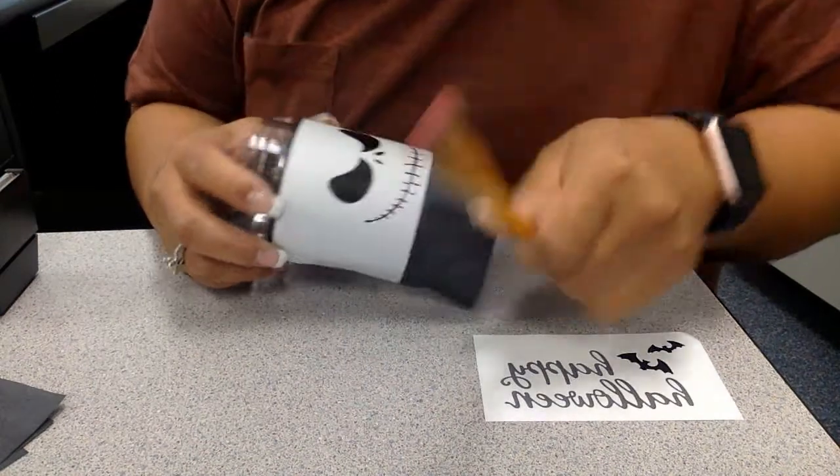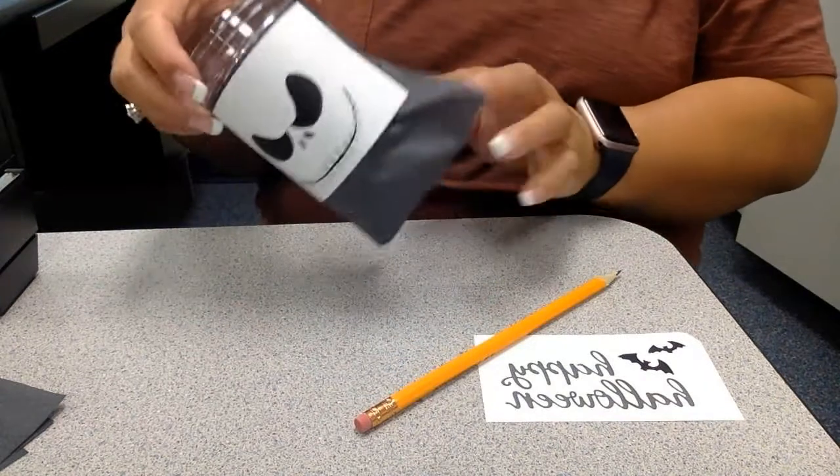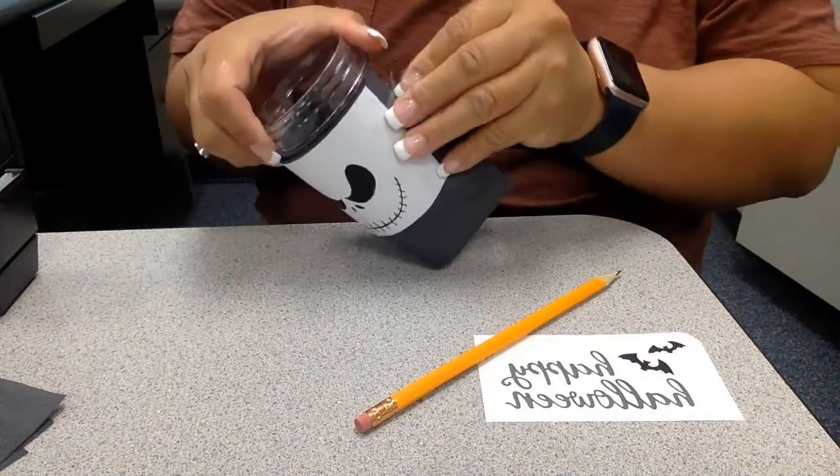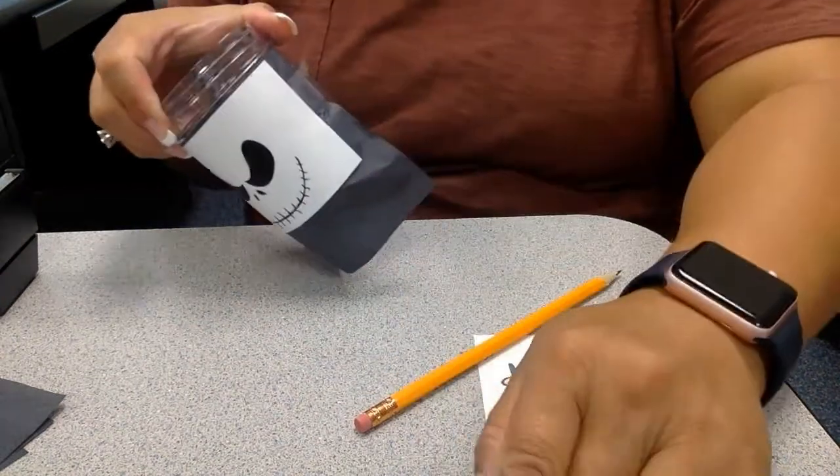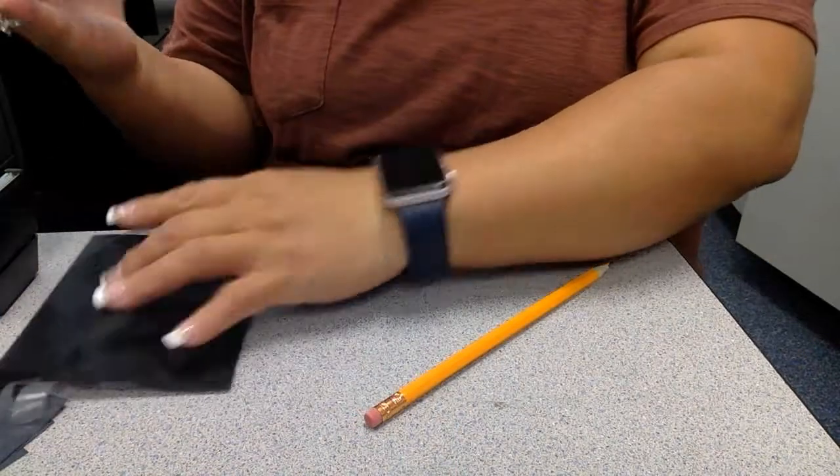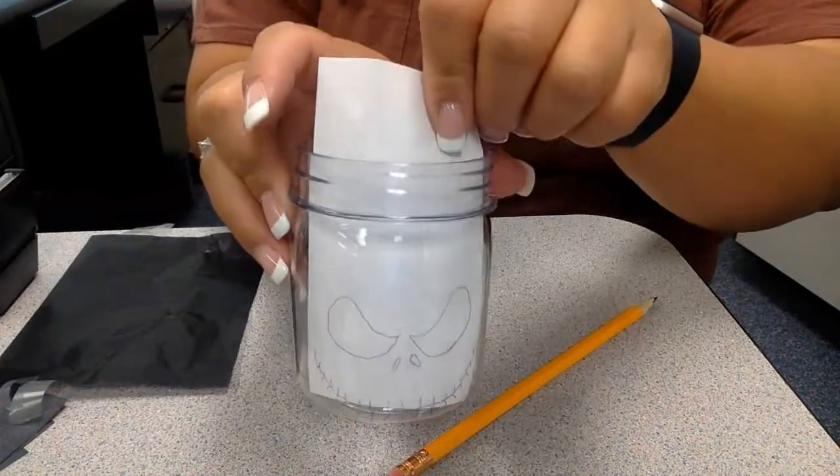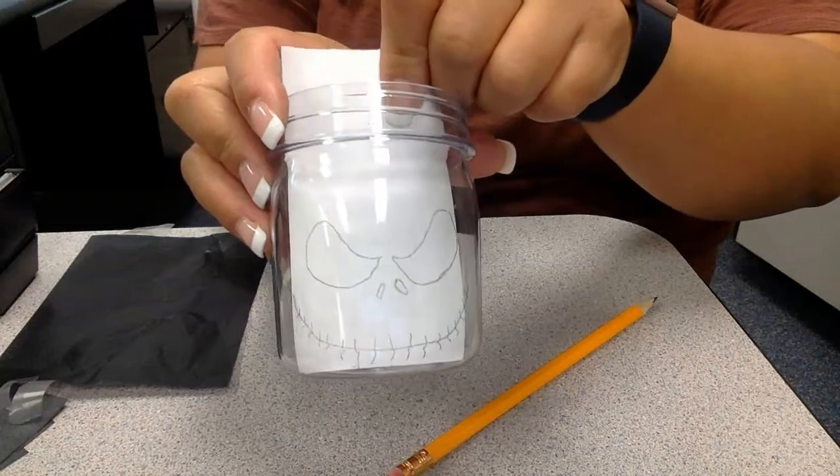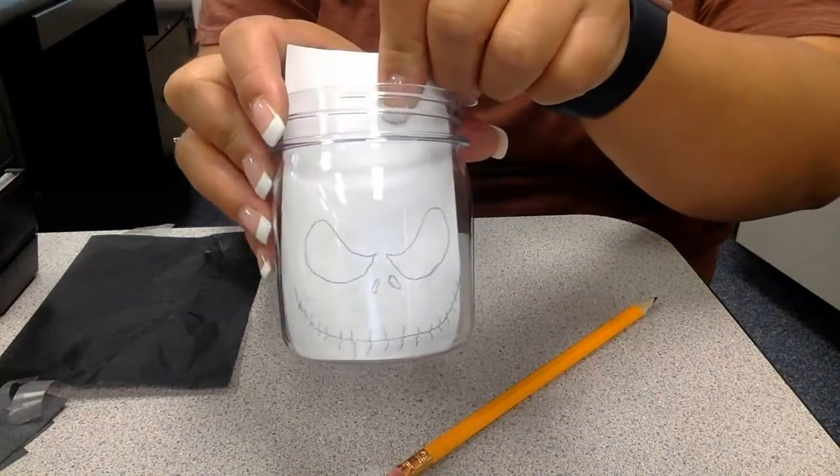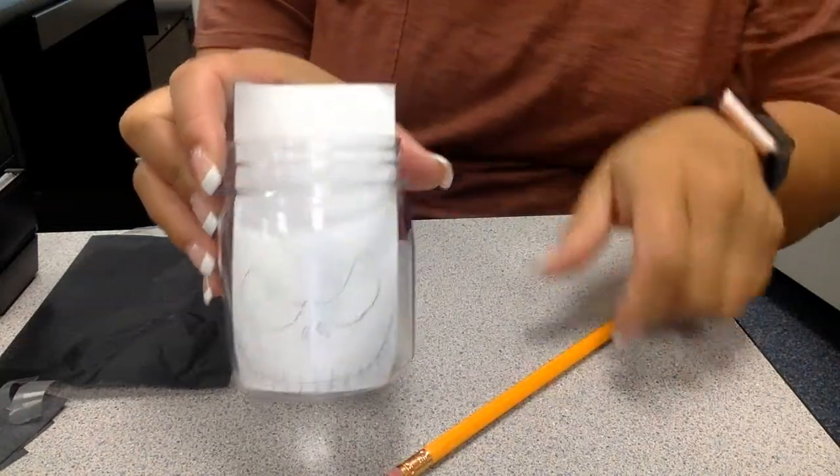Now you can actually take a pencil or a mandala tool to etch this out. So I'm just going to outline it, doesn't have to be perfect. Once you're done with that, you can go ahead and take off the tape.